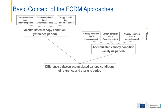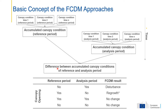The FCDM tool holds two different monitoring approaches: the FCDM optical approach working with Landsat and Sentinel-2, and a FCDM radar approach also implemented in the tool. The concept of both approaches is the same: a change detection approach that compares two periods in time — a reference period and an analysis period. For both periods, all available scenes are analyzed for canopy conditions, accumulated, and processed to derive the difference. If there has been no canopy opening in the reference period but an opening in the analysis period, we get a disturbance event; the opposite results in a regrowth event.